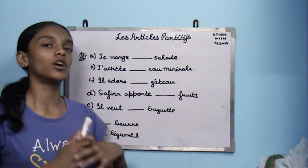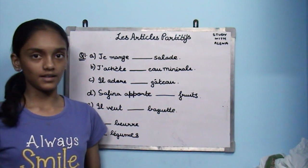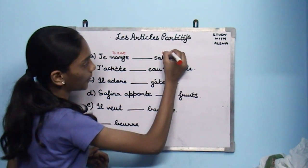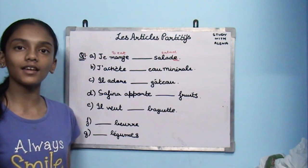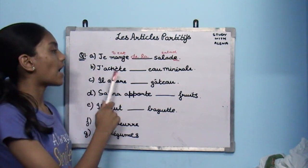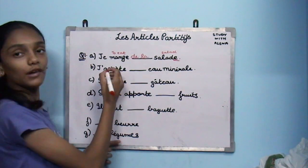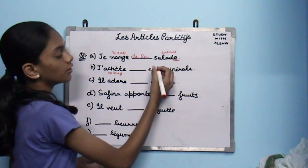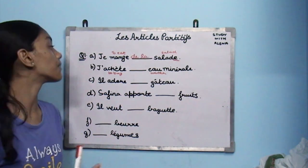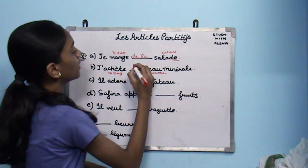Now let's do some exercises to clear the concept. Question one: fill in the blanks with the article partitif. The first one says je mange ___ salade. Manger is to eat. Salade is salad. It has an E at the end which means it is feminine, so it would be de la salade. Next: j'achète ___ eau minérale. Acheter is to buy. Eau is water and eau minérale is mineral water. It starts with a vowel, so we write de l'eau minérale.